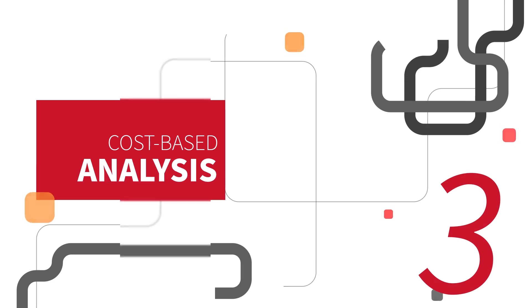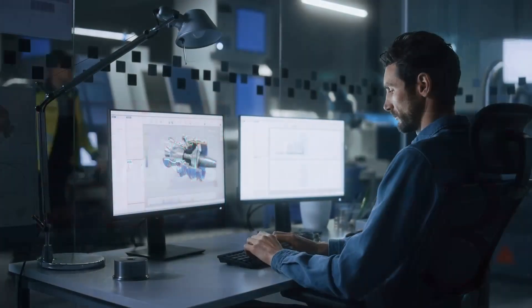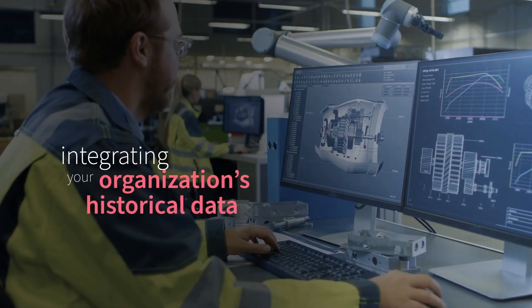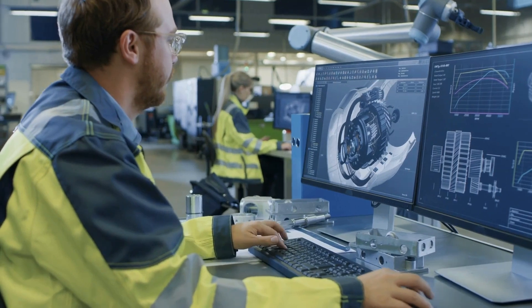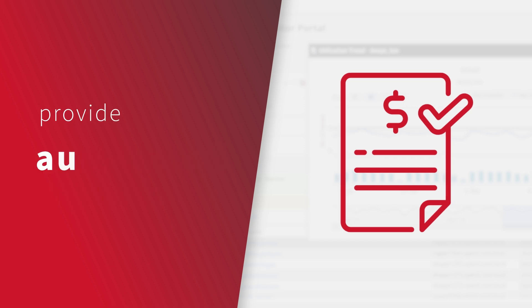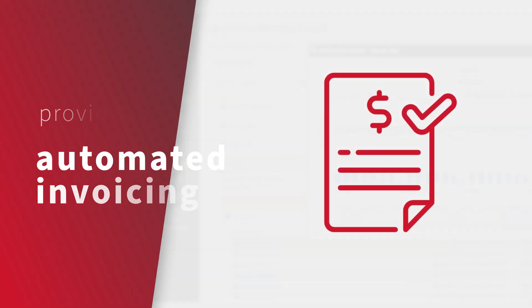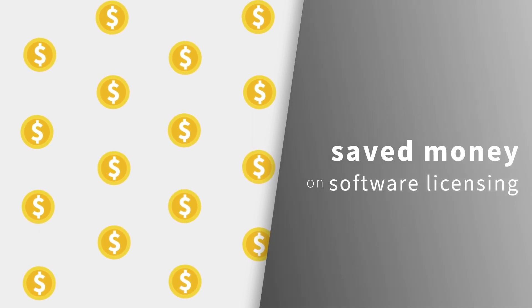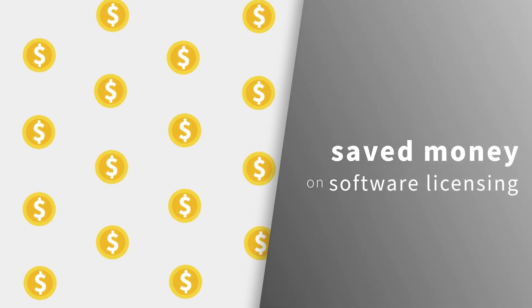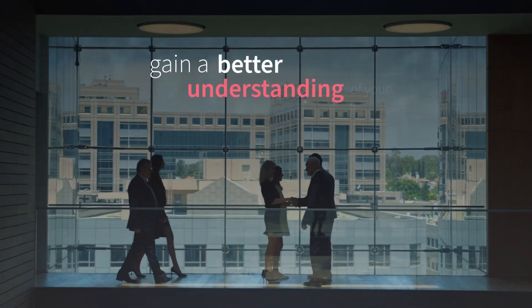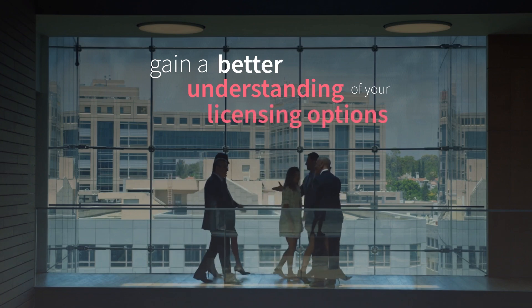3. Cost-Based Analysis. Once you have all this information, we will help you put it all into context by integrating your organization's licensing and maintenance expenses into the OpenIT dataset. That means you will be able to generate cost-based reports and even provide automated invoicing to different departments or stakeholders, painting a clear picture of how much money was spent on licensing and how much money can be saved by optimizing the licensing environment. You will also be able to ask cost-based questions and gain a better understanding of not only what your options are, but also how much they will eventually save your organization.